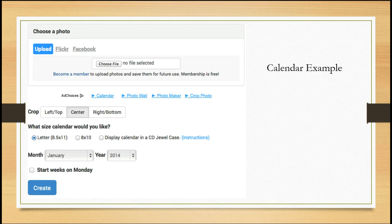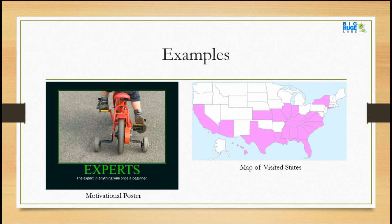The steps to create something on Big Huge Labs are very simple. This is an example of how to make a calendar — you simply choose a photo, crop it, choose your size and your month, and then create. The directions really are that simple. Here is an example of a motivational poster. It was really simple to make — I found a picture on Google Images and imported it, found an inspirational quote and added it. You can customize it by choosing your border and your background.